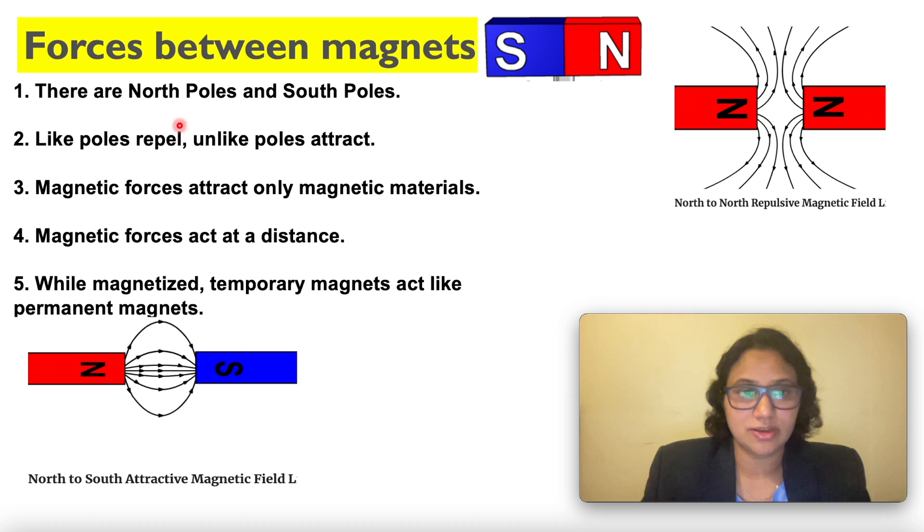There are north poles and south poles. Like poles repel each other and unlike poles attract each other. Magnetic forces attract only magnetic materials. Magnetic forces act at a distance. While magnetized, even temporary magnets act like permanent magnets.